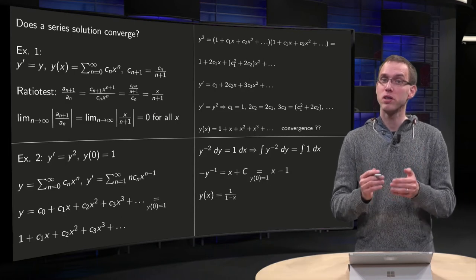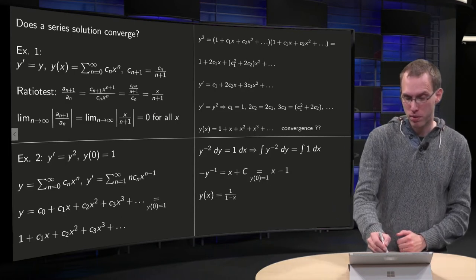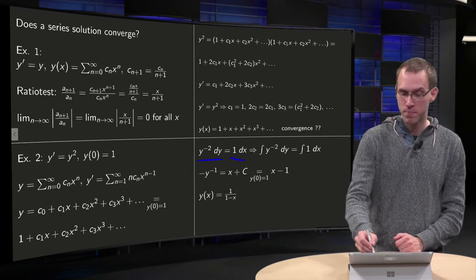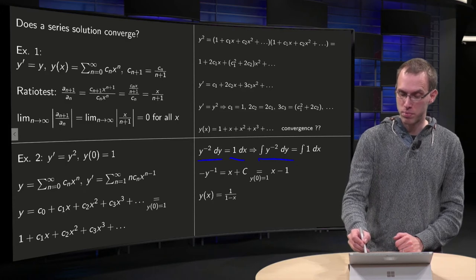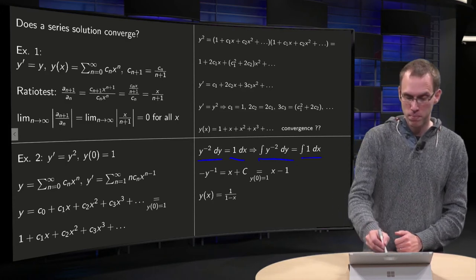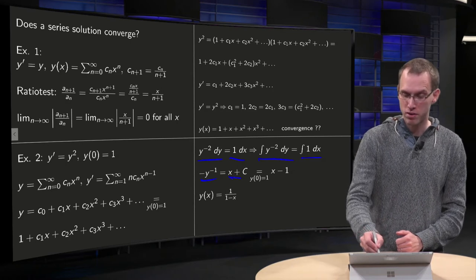y prime equals y squared, we can separate it, we get y to the power minus 2 dy equals 1 dx, we can integrate left and right, with respect to y on the left, with respect to x on the right, so we get minus y to the power minus 1 equals x plus a constant.